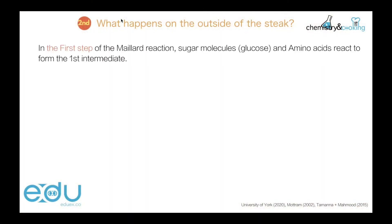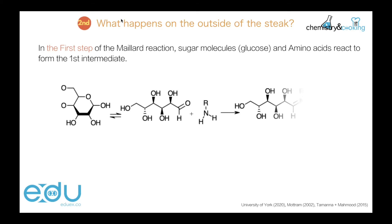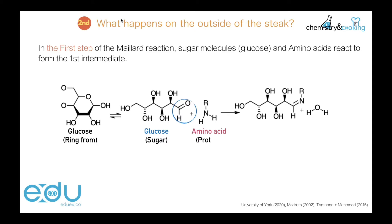In the first step of the Maillard reaction, we have the sugar — the glucose molecules — reacting with the protein, specifically the amino acids, and forming a first intermediate. Glucose can exist in a ring form, but also in an open-chain structure, and it is the aldehyde group in this open structure that takes part in the reaction. In the amino acids, the nitrogen takes part in the reaction: its lone pair attacks the carbon of the carbon double bond oxygen. That is the first step of a multi-step process.